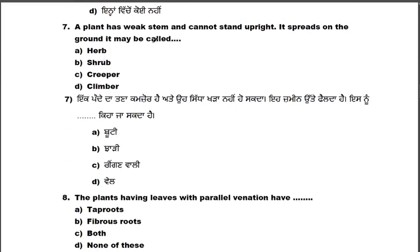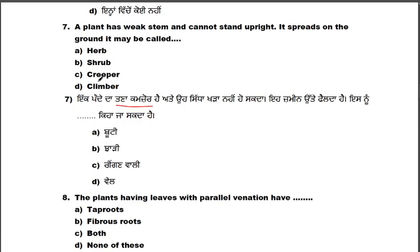A plant has a weak stem. It cannot stand upright and spreads on the ground. What can it be? Options: herb, shrub, creeper, climber.